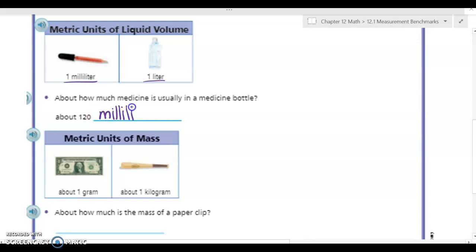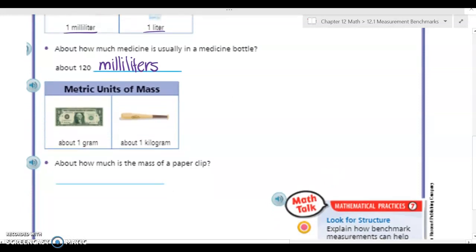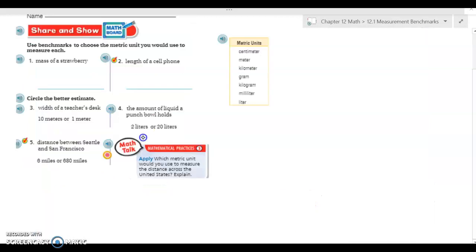Okay, my last metric unit is mass, or how much something weighs. A dollar bill weighs about a gram, and a wooden baseball bat weighs about one kilogram. So about how much is the mass of a paper clip? Well if I think about a paper clip and a dollar bill, they're pretty close to the same weight. So I'm going to say a paper clip is less than one gram, it's a little bit less than a dollar bill. Okay, and those are our examples for metric benchmarks.